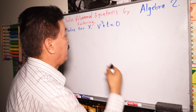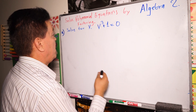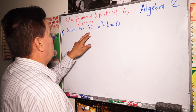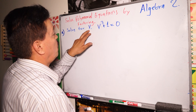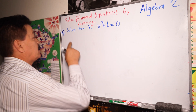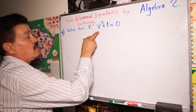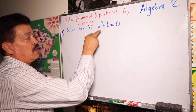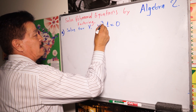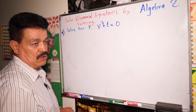What is the process to find the answer? We are going to solve for B. Solve for B this equation: B to the third power plus one equals zero.